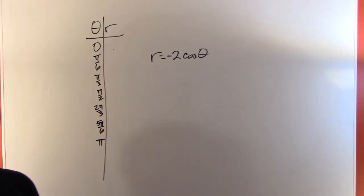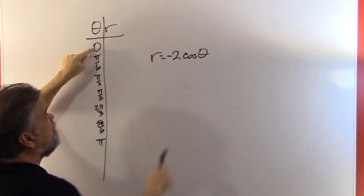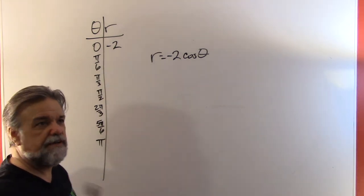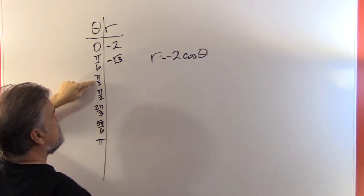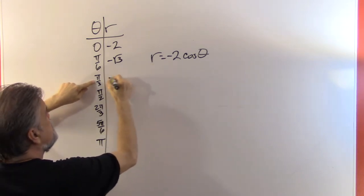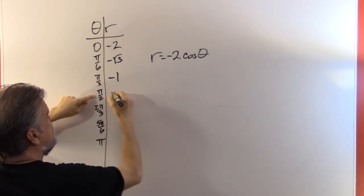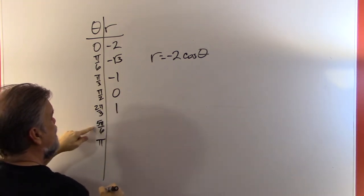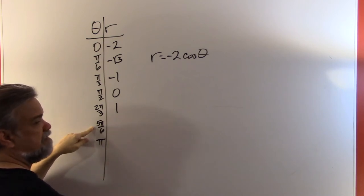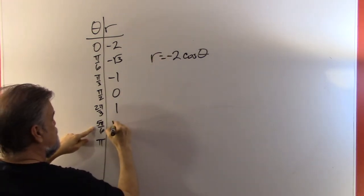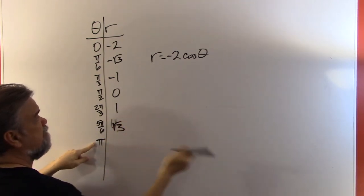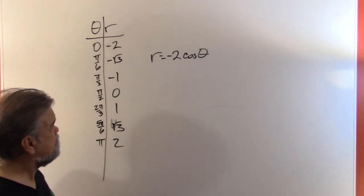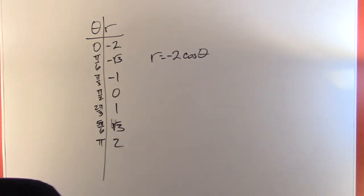Now let's see what r is going to be. Cosine of zero is one, times negative two is negative two. Cosine of pi over six is root three over two, times negative two is negative root three. Cosine of pi over three is one half, times negative two is negative one. Cosine of pi over two is zero, so r is zero. Cosine of two pi over three is negative one half, times negative two is positive one. Cosine of five pi over six is negative root three over two, times negative two is positive root three. And cosine of pi is negative one, times negative two is two.